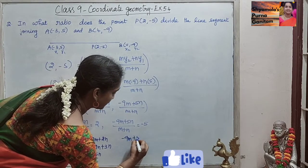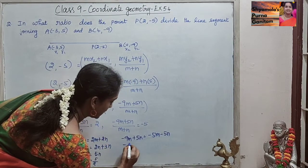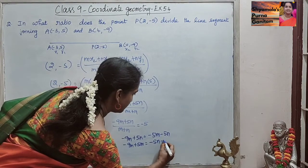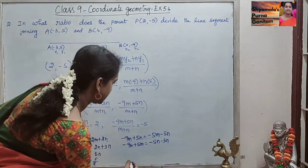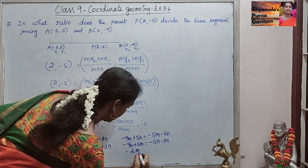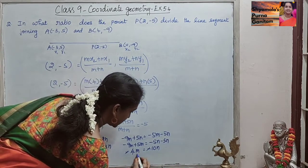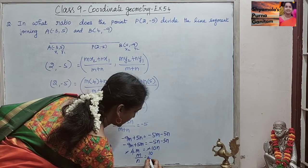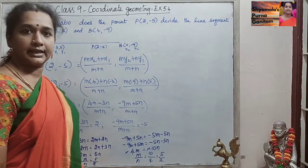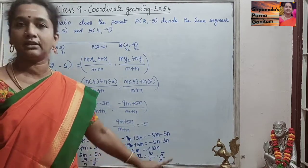So that we will also check using the y-coordinate. -9m + 5n equals -5m - 5n. So -9m + 5m equals -5n - 5n. So -4m equals -10n. The negatives cancel, and m/n equals 10/4, that is equal to 5/2. So the same ratio — if we find one, it is enough. I just wanted to check that you are definitely getting the same ratio.